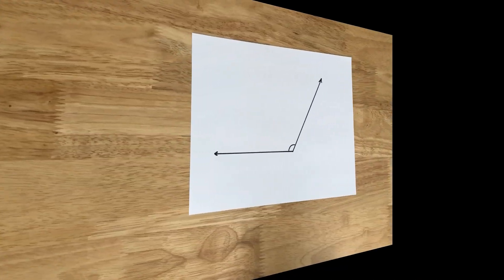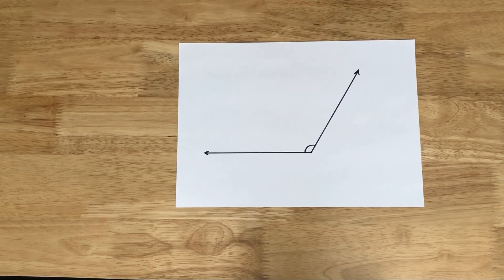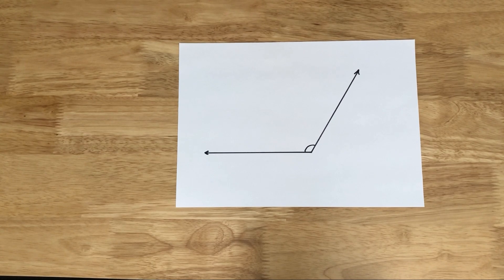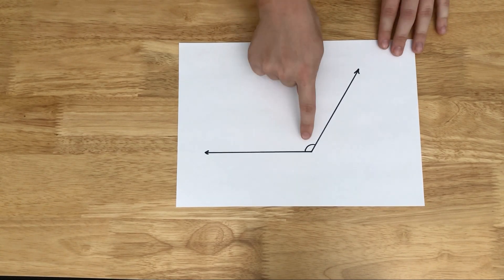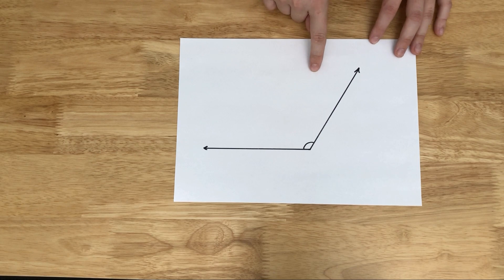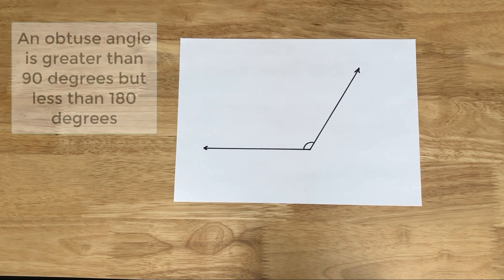Let's try another one. Now with this angle, we can see that it must be more than 90 degrees because our right angle would be over here, so this must be an obtuse angle.